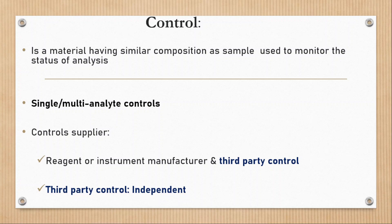Control - control is a material having similar composition as sample used to monitor the status of analysis. Their sole purpose is to know whether a given method is providing the same result day after day or not. So they check assay consistency over time.